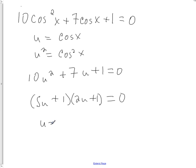So I know when u equals negative 1 fifth is a solution. And when u equals negative 1 half, there's a solution. And then, of course, I probably want to return this back to cosine.